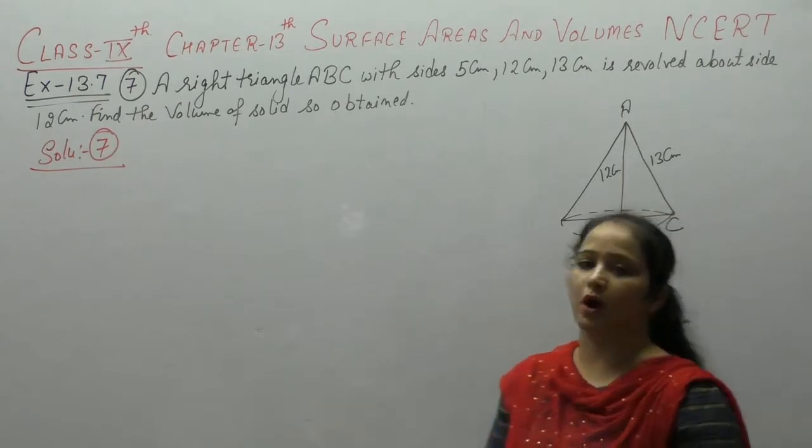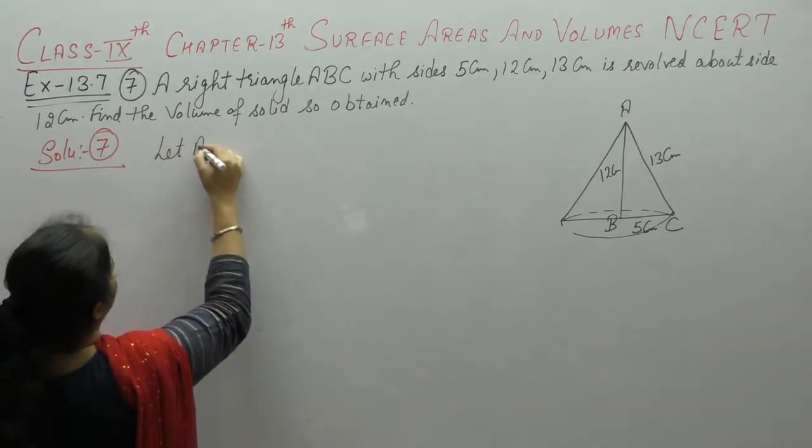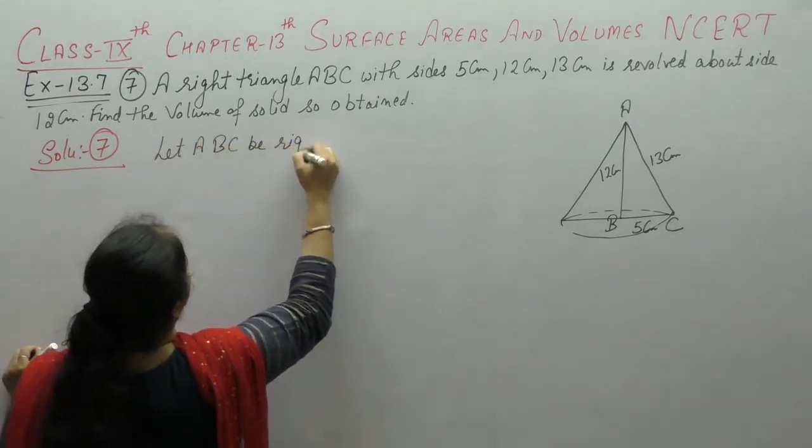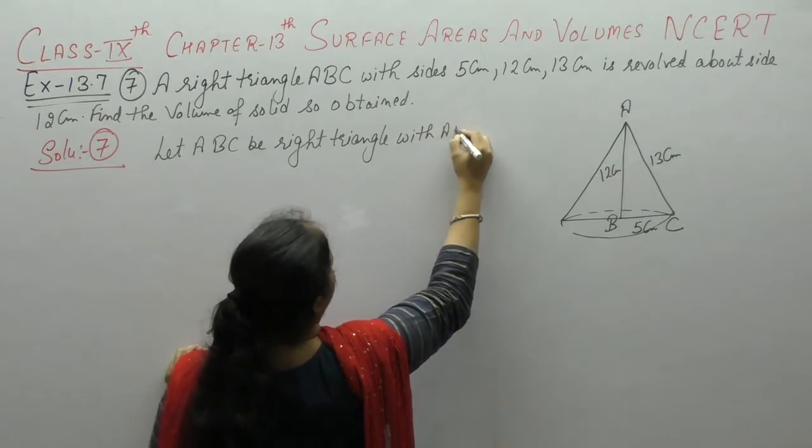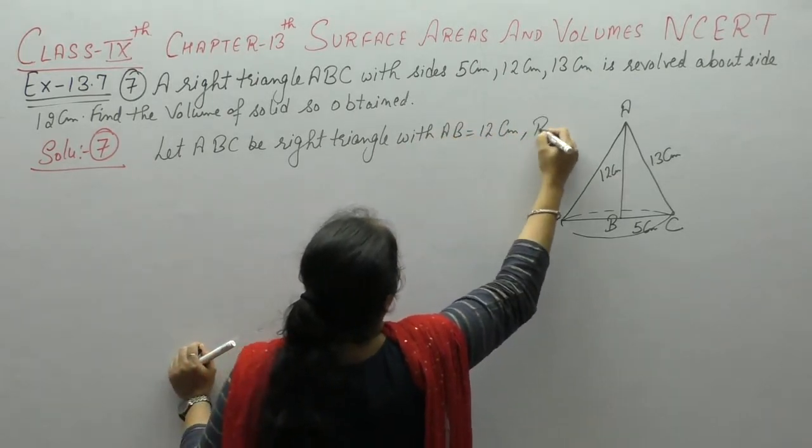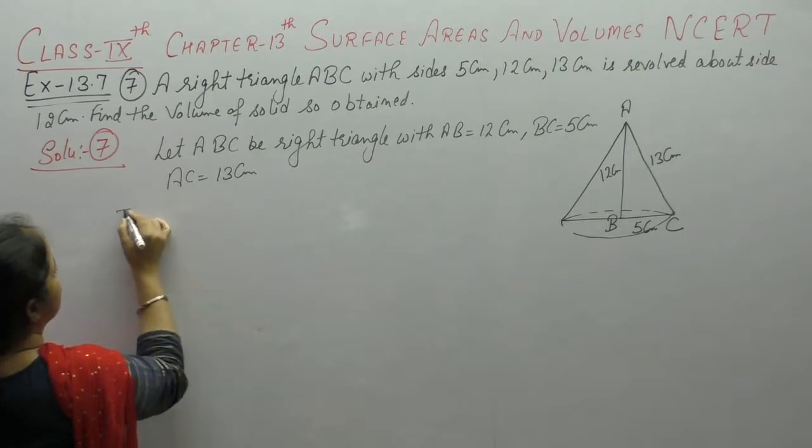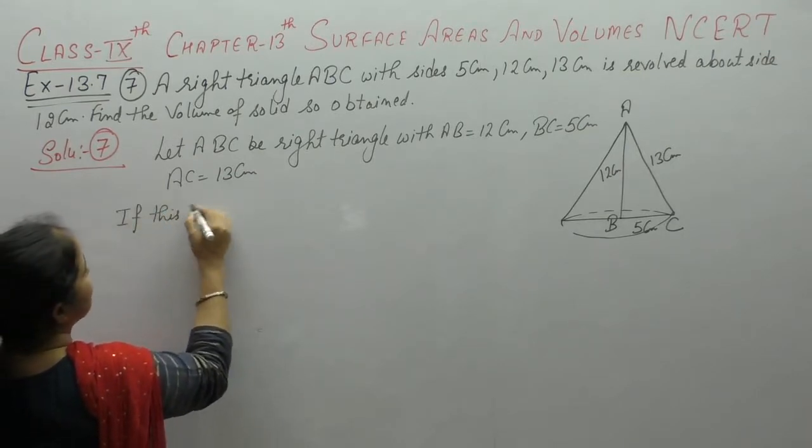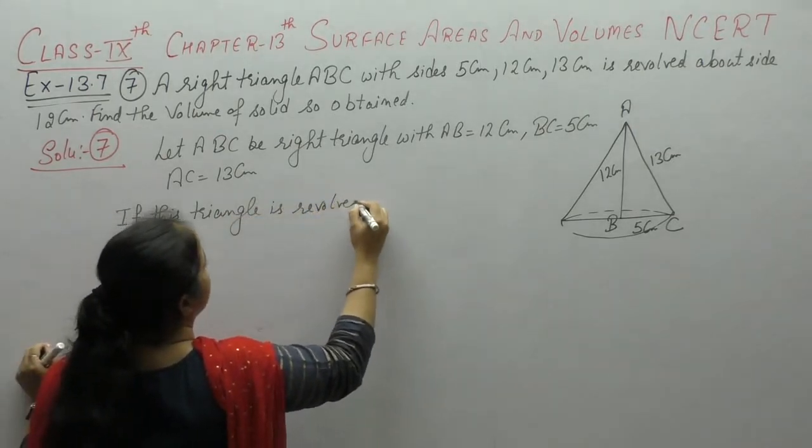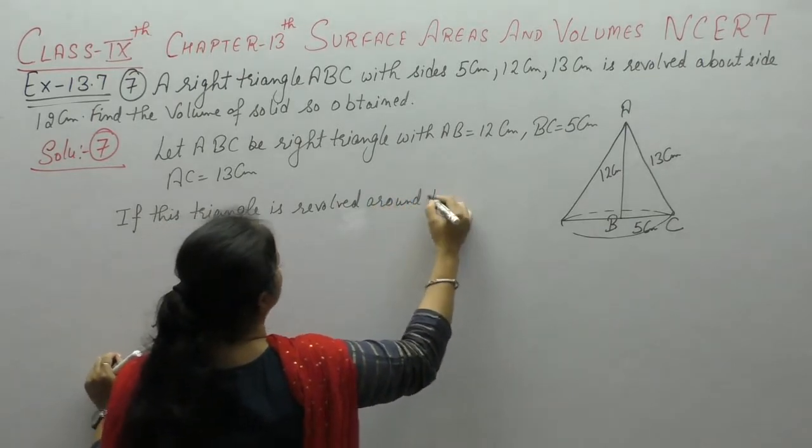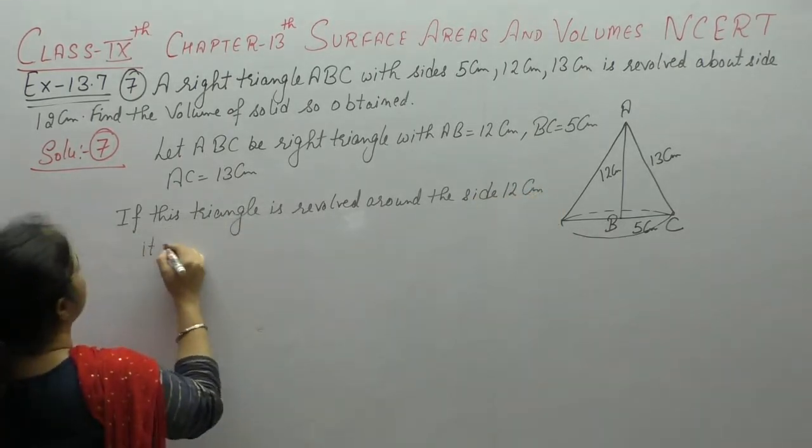Find the volume of solid so update. So write down, let ABC be a right triangle with AB equals 12 cm, BC equals 5 cm, AC equals 13 cm. If this triangle is revolved around the side 12 cm it forms a cone.